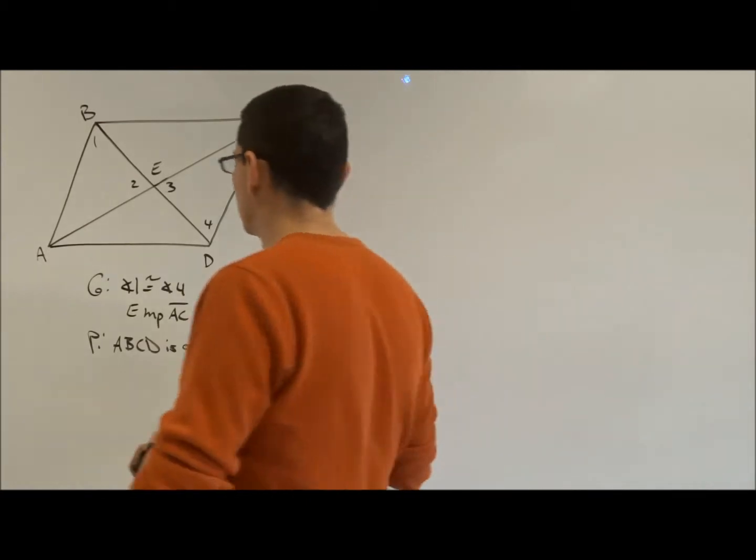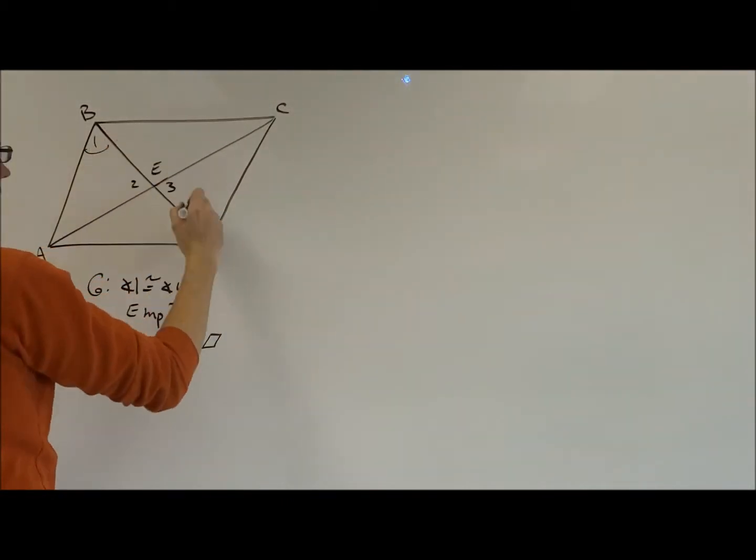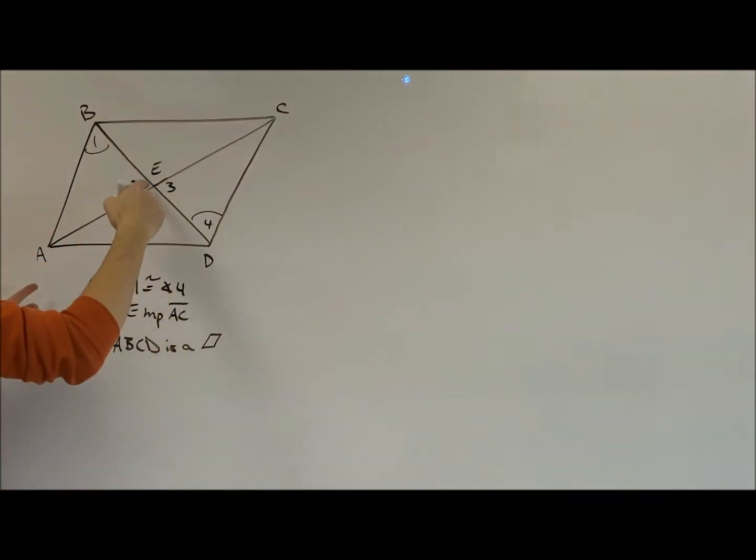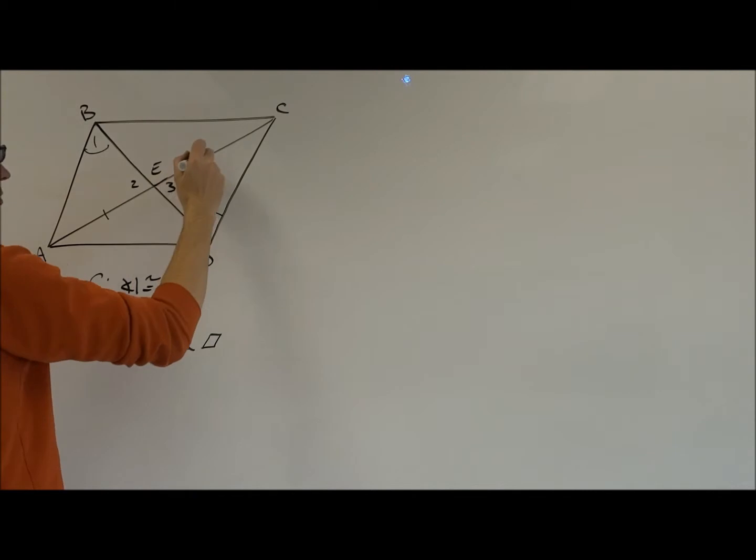Now look, we're given angle 1 is congruent to angle 4. We're given E is the midpoint of segment AC. What does a midpoint do? A midpoint divides a segment into two congruent parts.